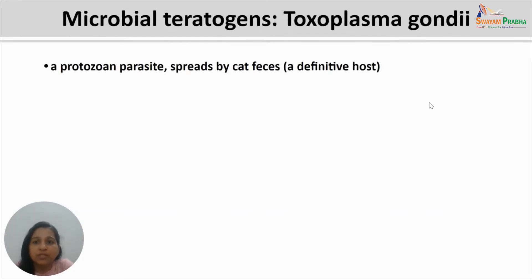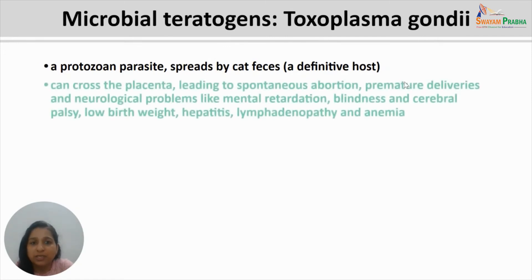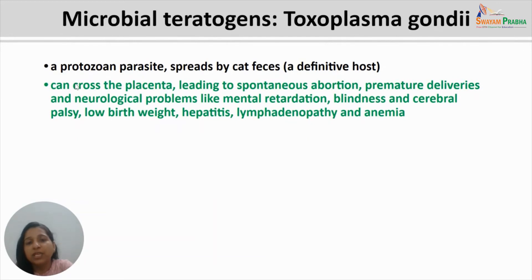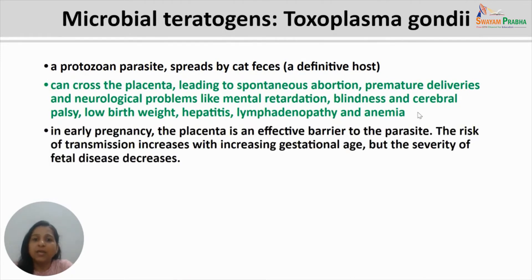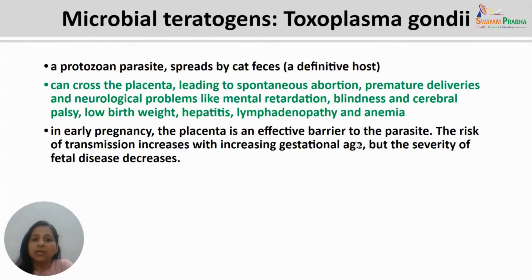Infection with Toxoplasma gondii, a protozoan parasite spread by cats as its definitive host, can cause teratogenic effects. It can cross the placenta, leading to spontaneous abortion, premature deliveries, or neurological problems like mental retardation, blindness, cerebral palsy, low birth weight, hepatitis, lymphadenopathy, and anemia. In early pregnancy the placenta is an effective barrier to the parasite. The risk of transmission increases with increasing gestational age; however, the severity of fetal disease decreases with increasing gestational age.